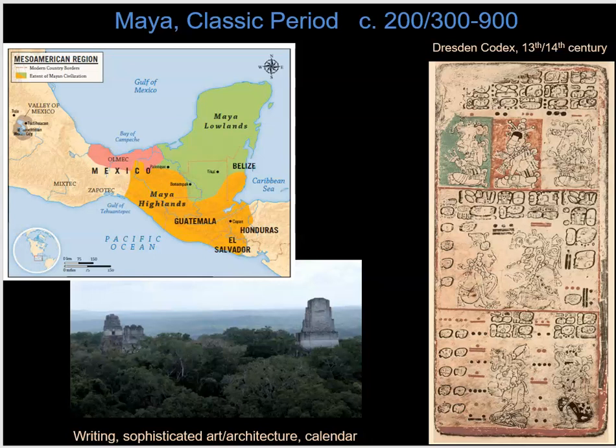These sites were somewhat remote from the regions where the Spanish actually settled. They also very quickly, after being abandoned, were overgrown by jungle. Consequently, they were protected from looting and disturbance until the 18th or 19th centuries, when Western scholars began to visit and investigate these sites.